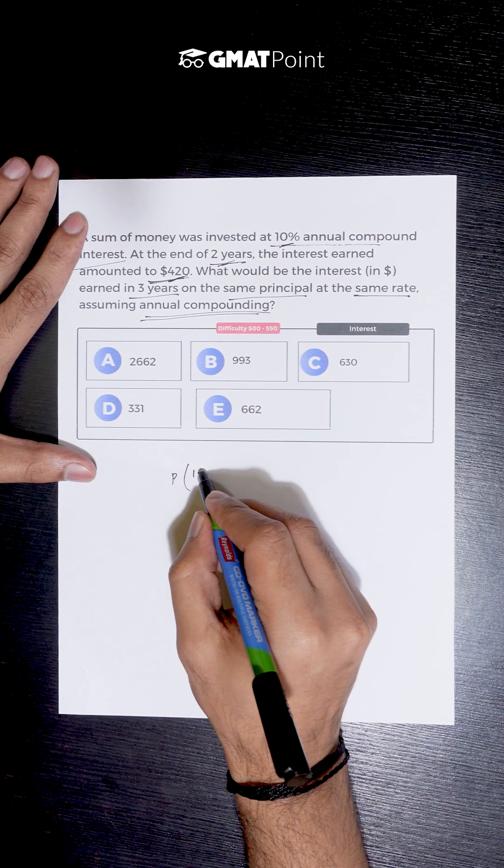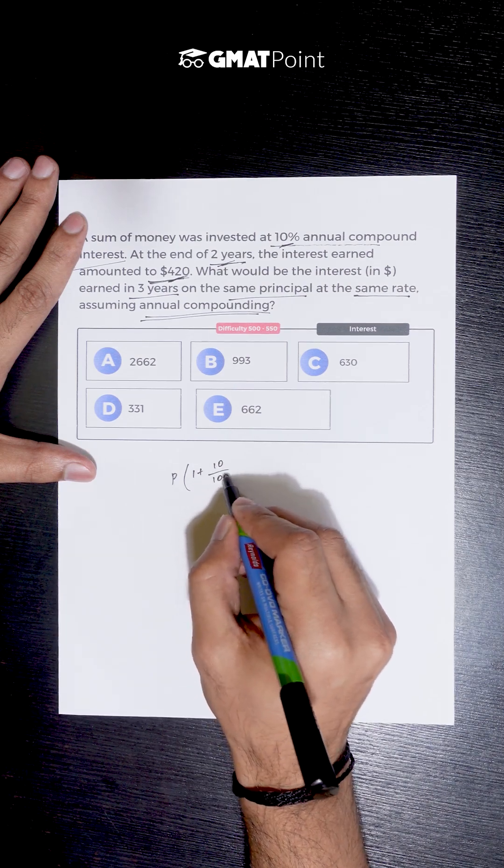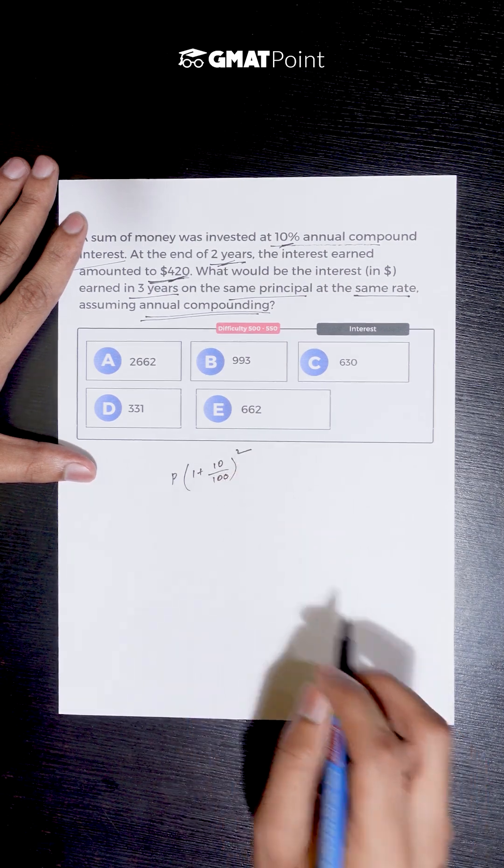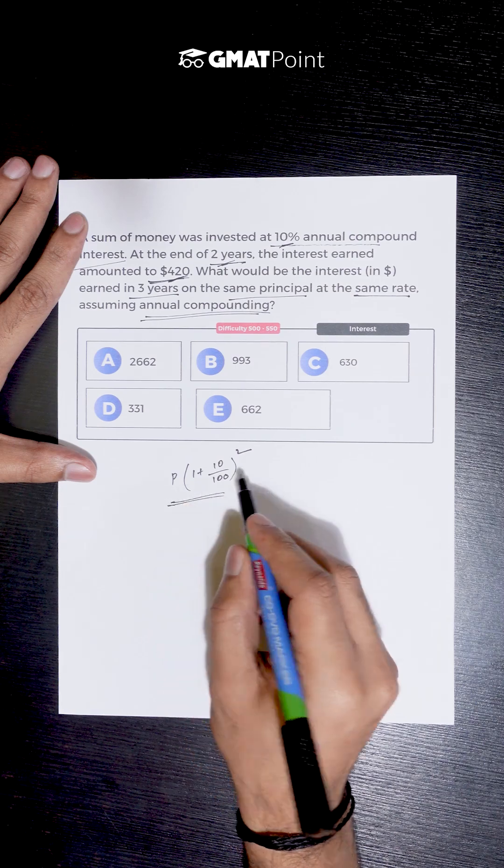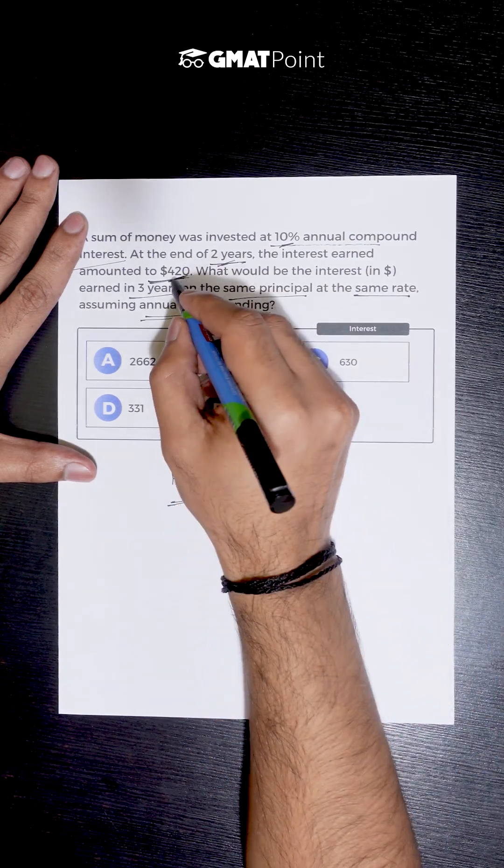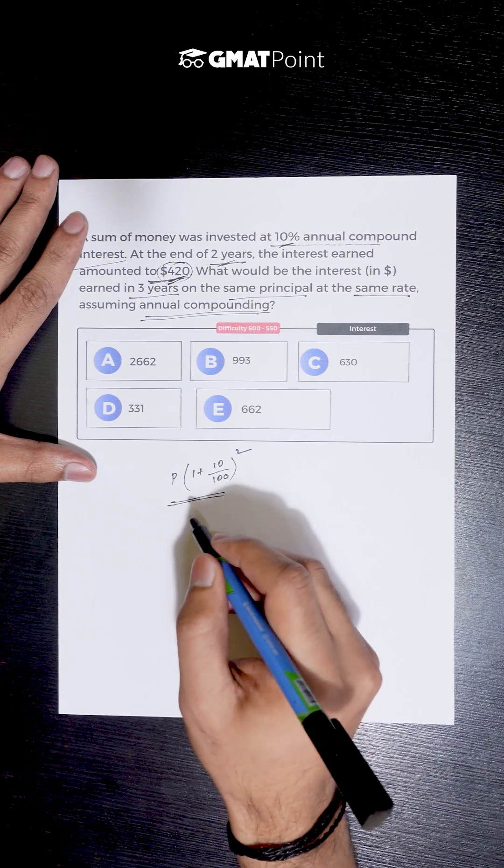At 10% annual interest, after two years the total amount would become P into (1 plus 10 by 100) whole square, and we are given the value of interest to be $420.